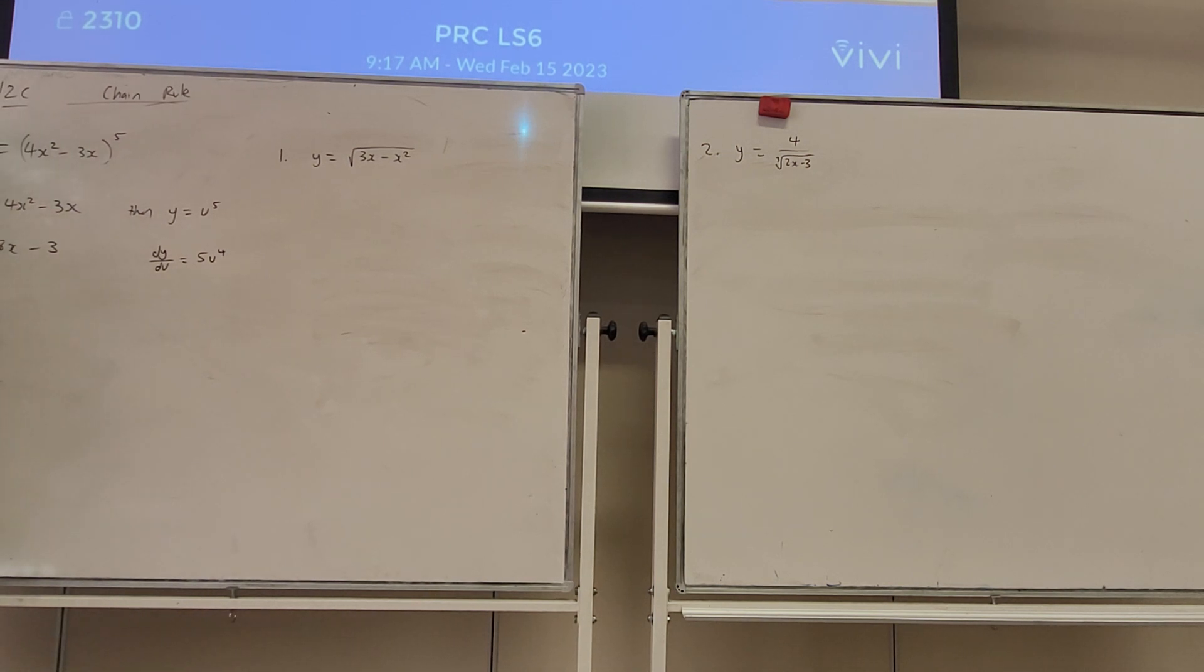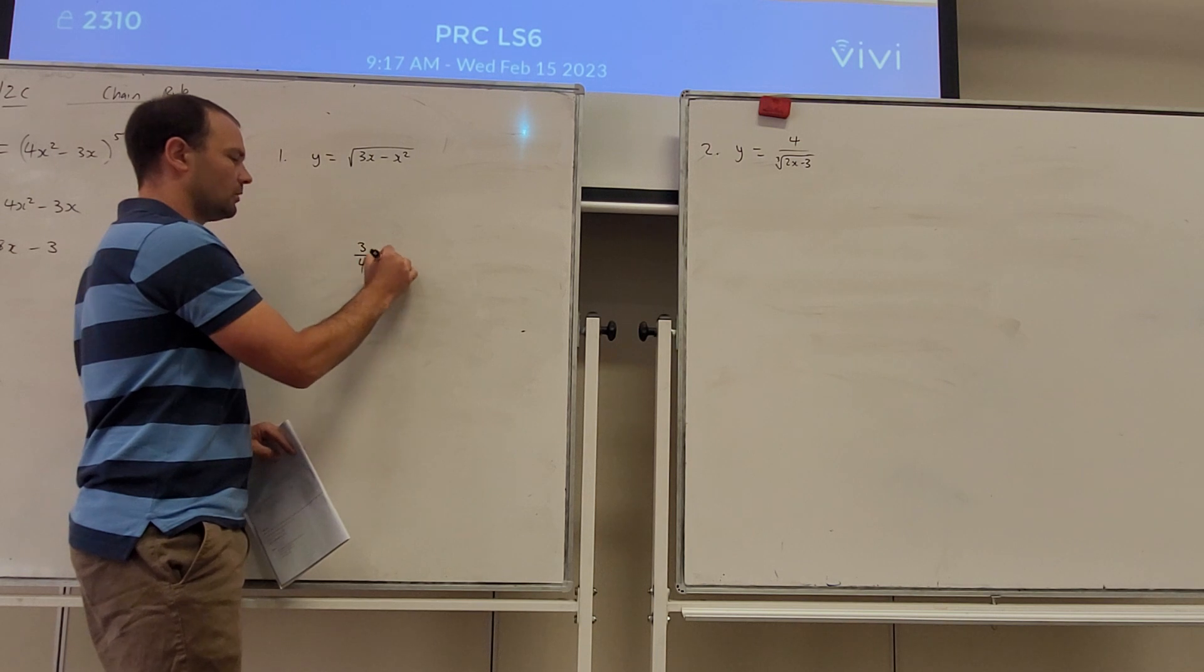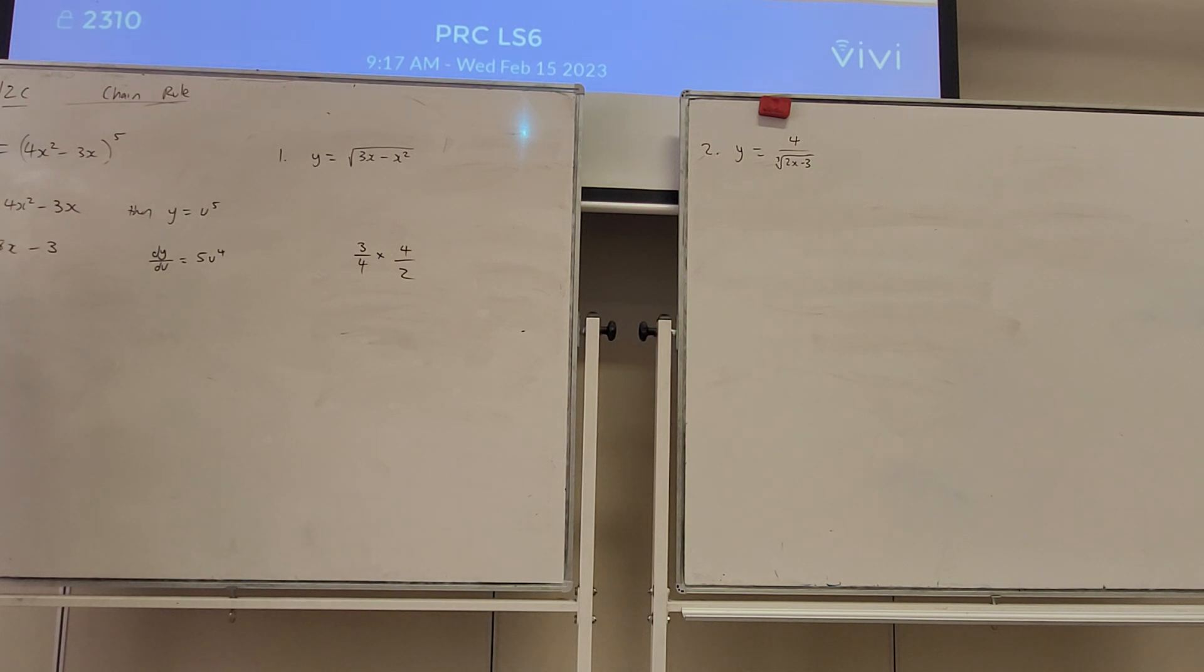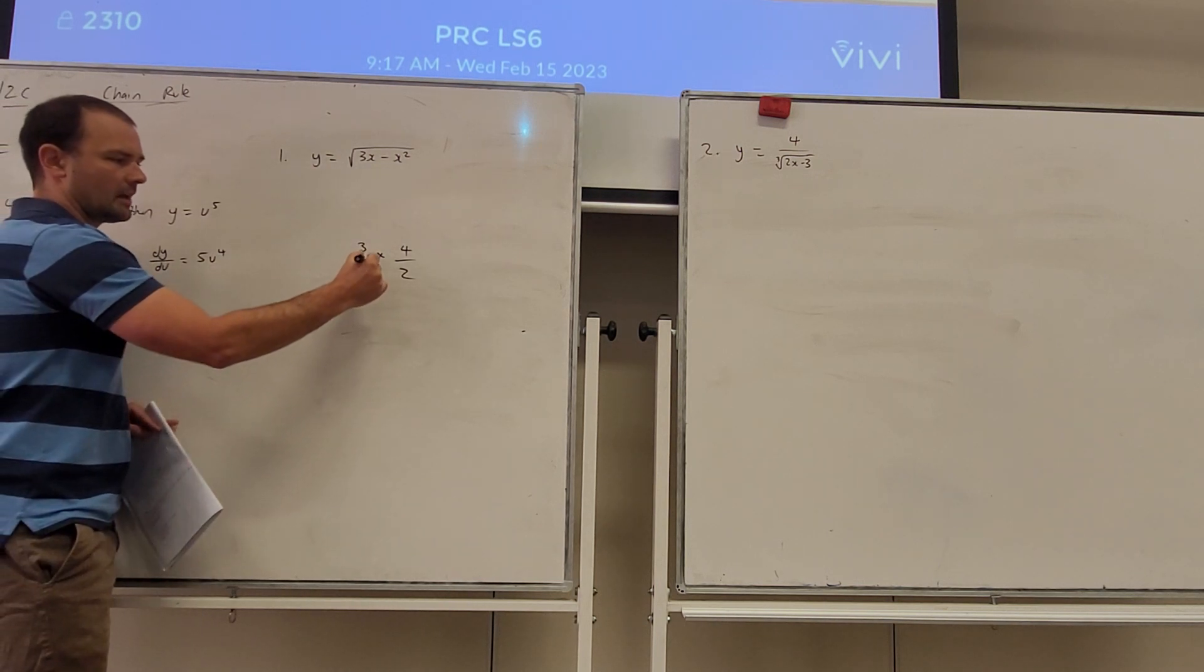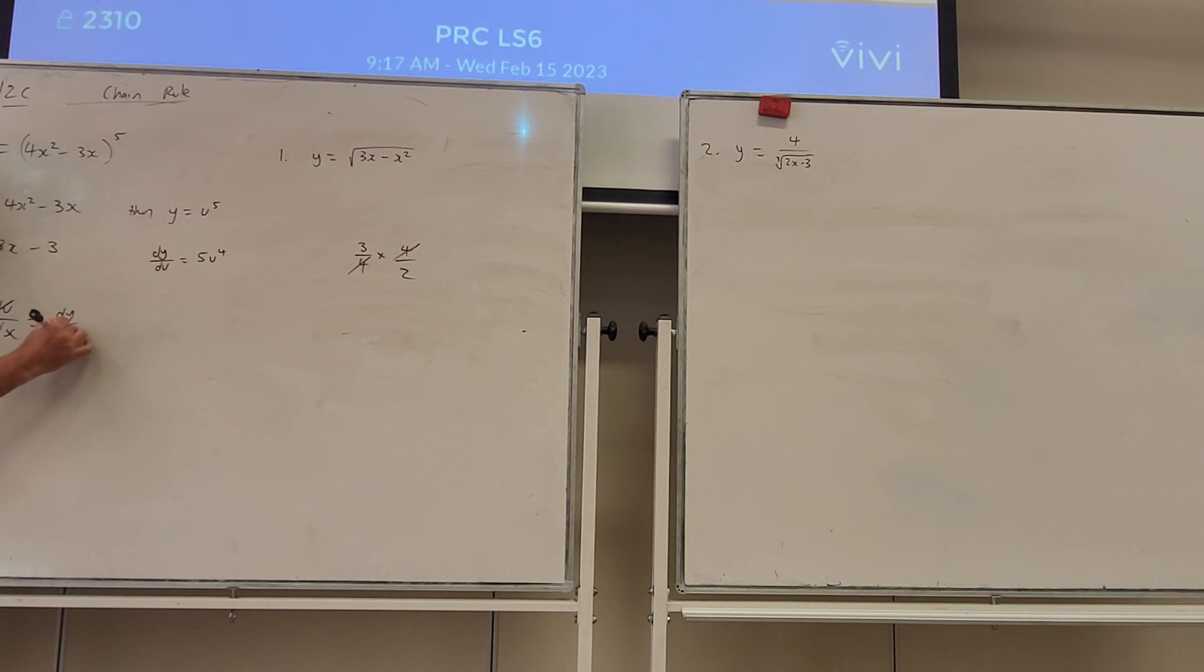Now let's do something a little bit clever. If I have 3 on 4 times 4 on 2, we could calculate that, but there's a really simple way we can evaluate it as well. When I'm multiplying these, I'm going to have 4 at the top and the bottom, so it's going to cancel. If we have the same thing at the top as we do at the bottom, it's going to cancel. Watch what happens if we multiply dy on du by du on dx. We have du at the top and bottom, it will cancel, and we're left with dy on dx.